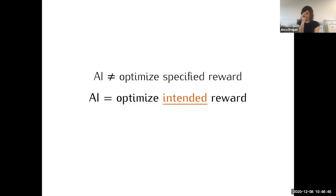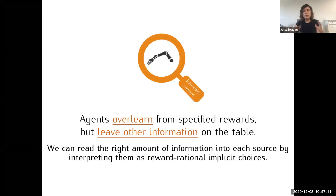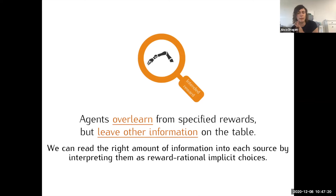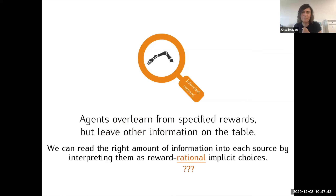It's not about specified rewards because specified rewards are wrong. We have to deal with this much harder problem of optimizing intended rewards. Luckily, there's a plethora of information about these intended rewards. We can start interpreting this information as choices that people are making implicitly with respect to the reward function they actually want — a framework for unifying and bringing all this information in. As you observe more and more about the person, you can update your understanding of what they want through the robot's lifetime. We over-learn from specified rewards but leave information on the table; hopefully we can read the right amount from each source by interpreting them as reward-rational implicit choices. Thank you very much.